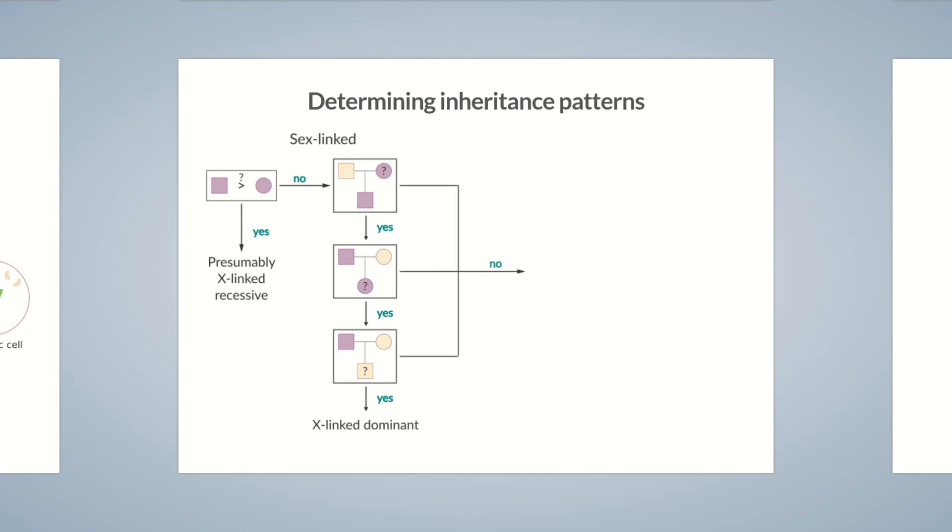If one or several of the questions are answered with no, the inheritance pattern is autosomal. In this case, you need to determine whether each affected child has at least one affected parent. Then the inheritance pattern is autosomal dominant. If the trait skips one or more generations, then the pattern of inheritance is autosomal recessive. Would you like to put this information into practice? Then stay put for the quiz!